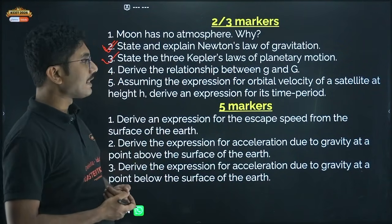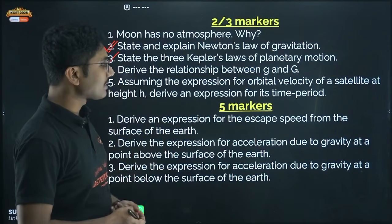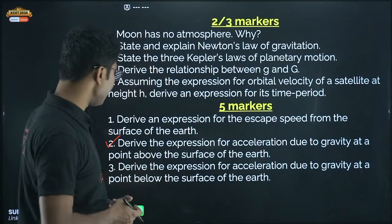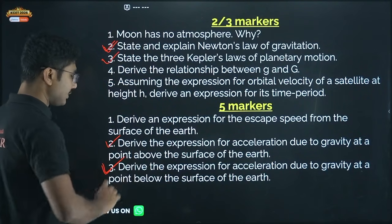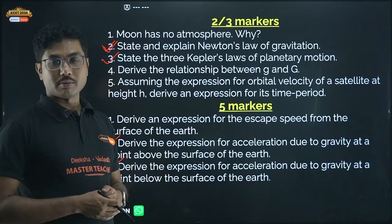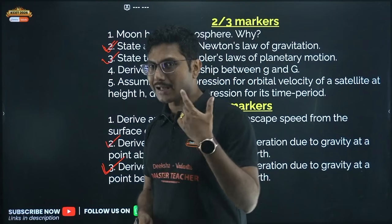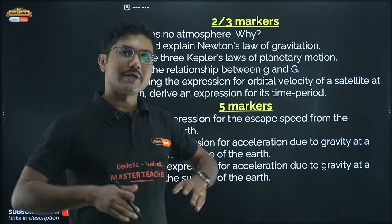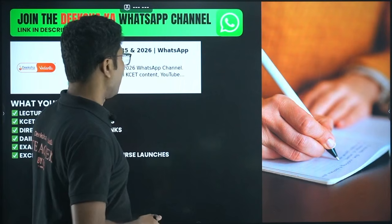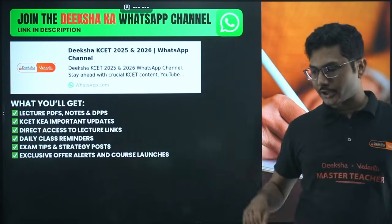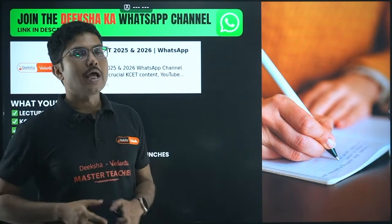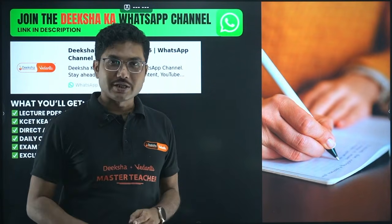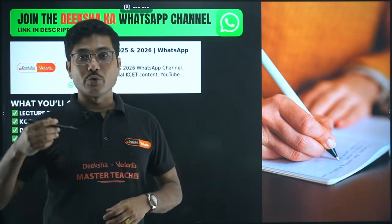More important derivations from Gravitation: derive an expression for escape speed from the surface of the Earth; derive the expression for acceleration due to gravity at a point above the surface of the Earth; derive the expression for acceleration due to gravity at a point below the surface of the Earth — this question has repeated many times in P1 final exams. Do join the WhatsApp channel to get questions and solutions.